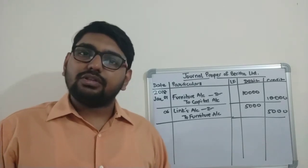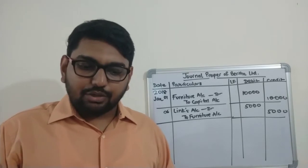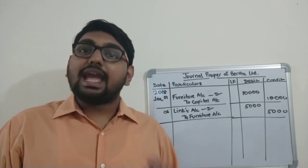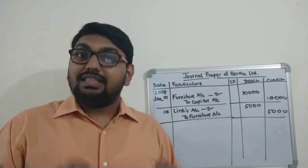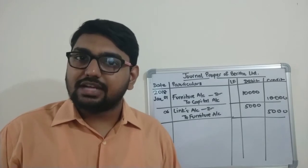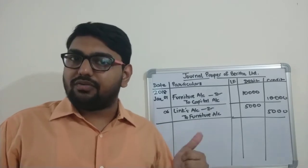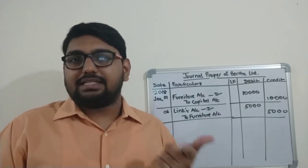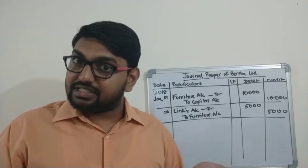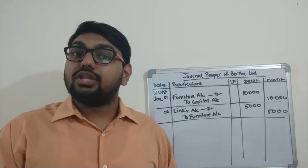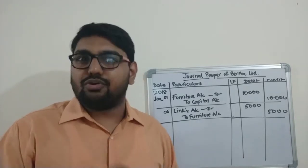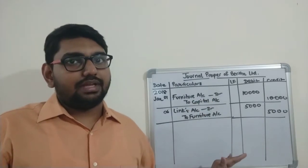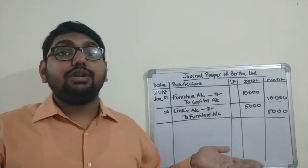January 12th: purchased goods for cash, rupees 6,500. This transaction will not come into the journal proper because goods are involved and cash is involved, so it is going to go into the cash book. No entry is made here.